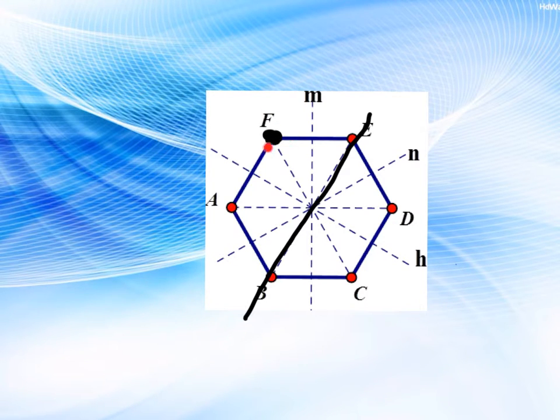Now a lot of students when they see F here follow the diagonal to the opposite side and say that C would be the reflection of that. Now that, unfortunately, while it is across the diagonal, is not the correct solution for this reflection.